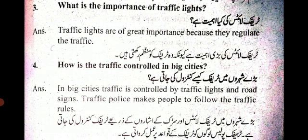Fourth question is: how is traffic controlled in big cities? بڑے شہروں میں traffic کیسے کنٹرول کی جاتی ہے؟ In big cities, traffic is controlled by traffic lights and road signs. Traffic police makes people follow the traffic rules. بڑے شہروں میں traffic lights اور سڑک کے اشاروں کے ذریعے traffic کنٹرول کی جاتی ہے، اور traffic police لوگوں کو traffic کے قواعد پر عمل کرواتی ہے۔